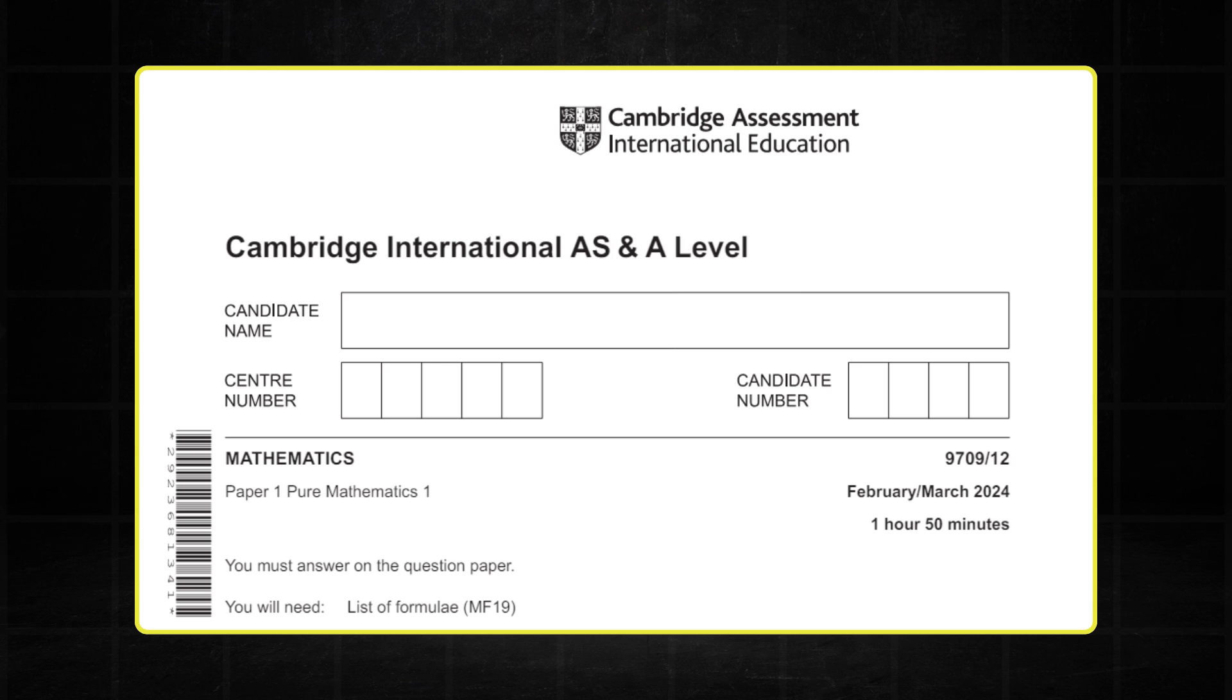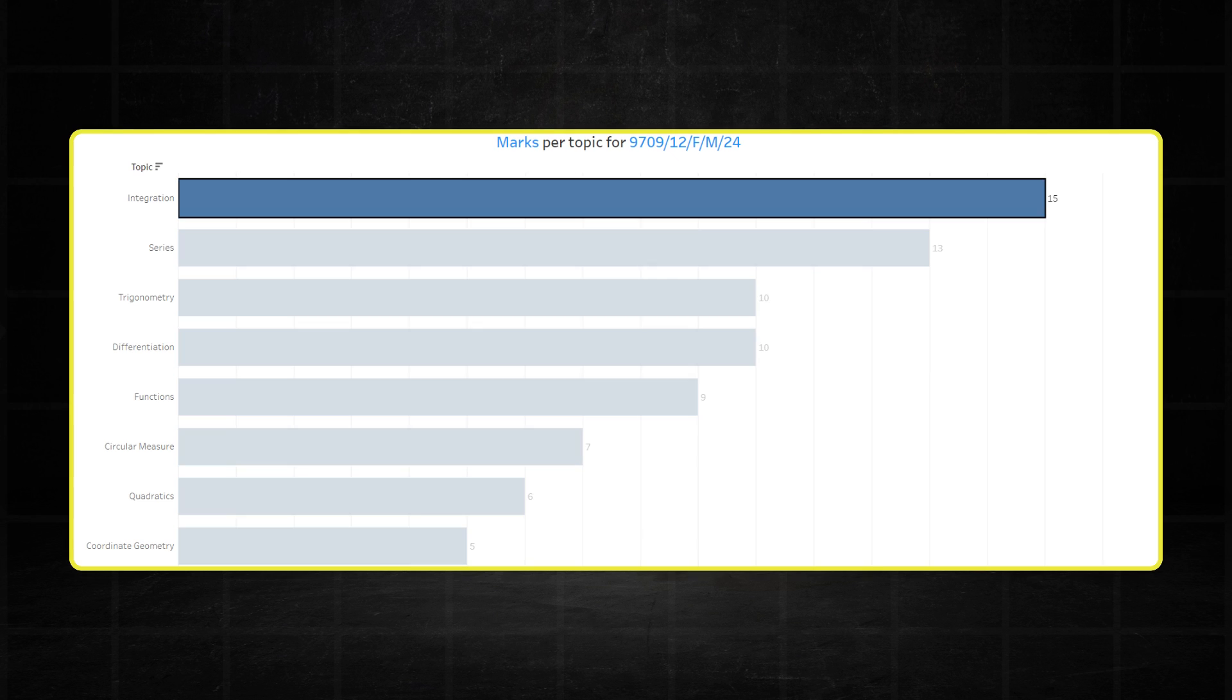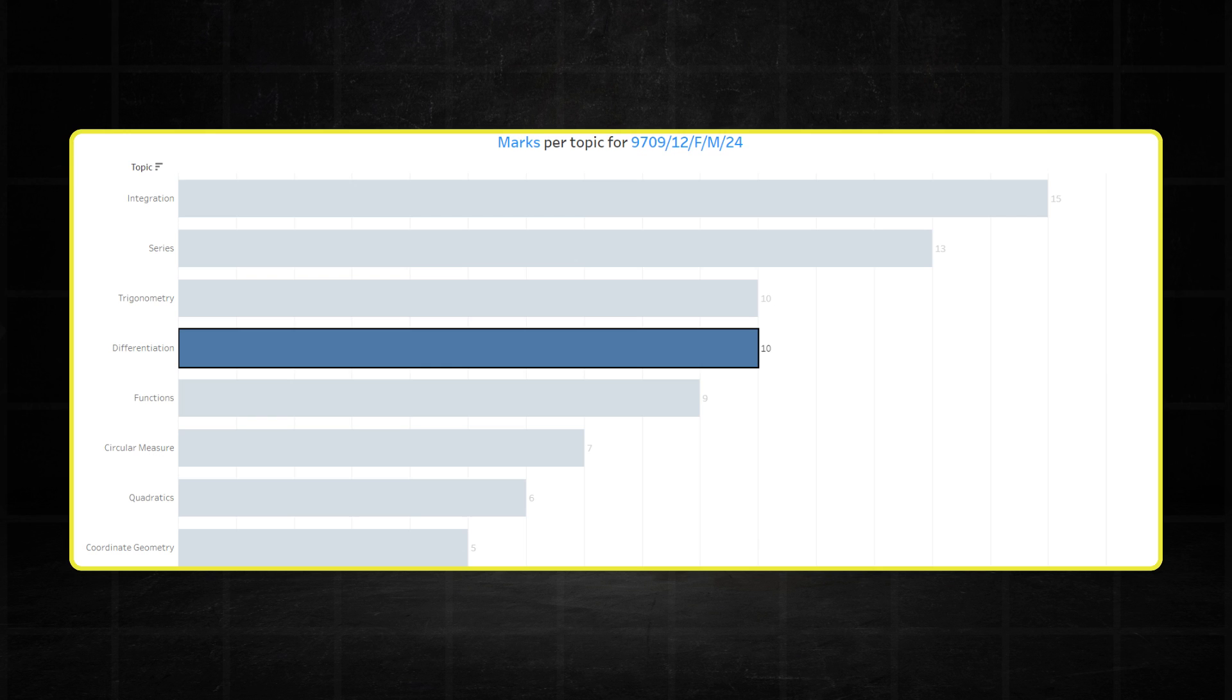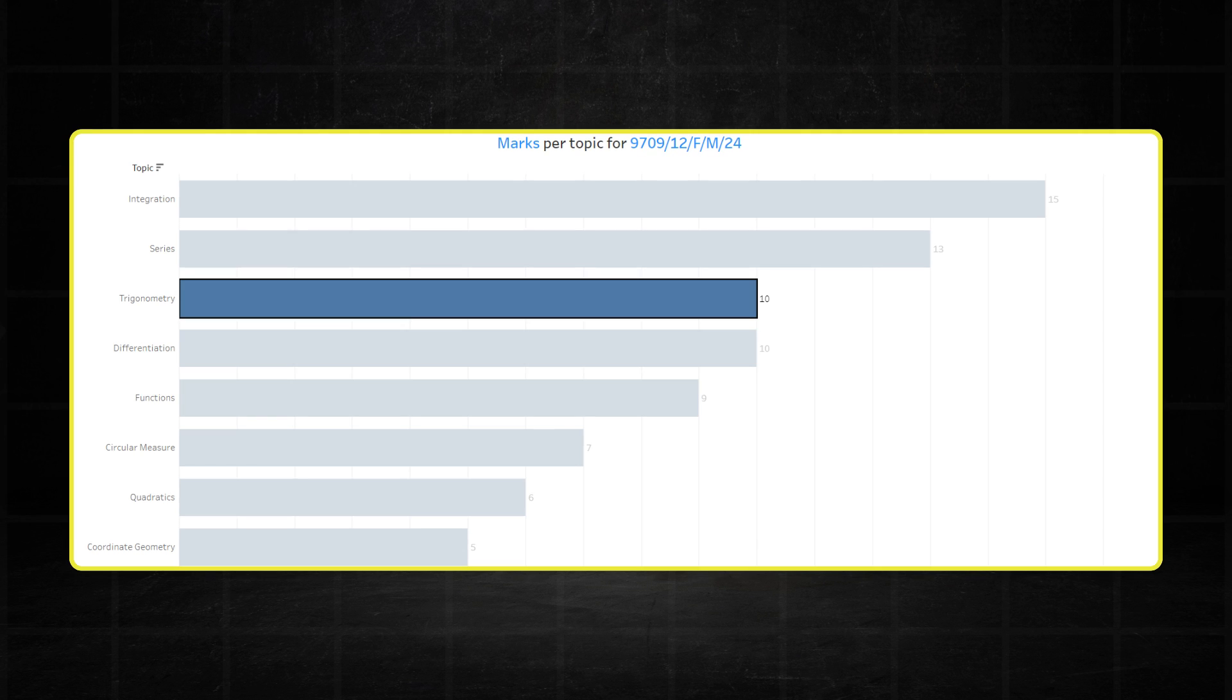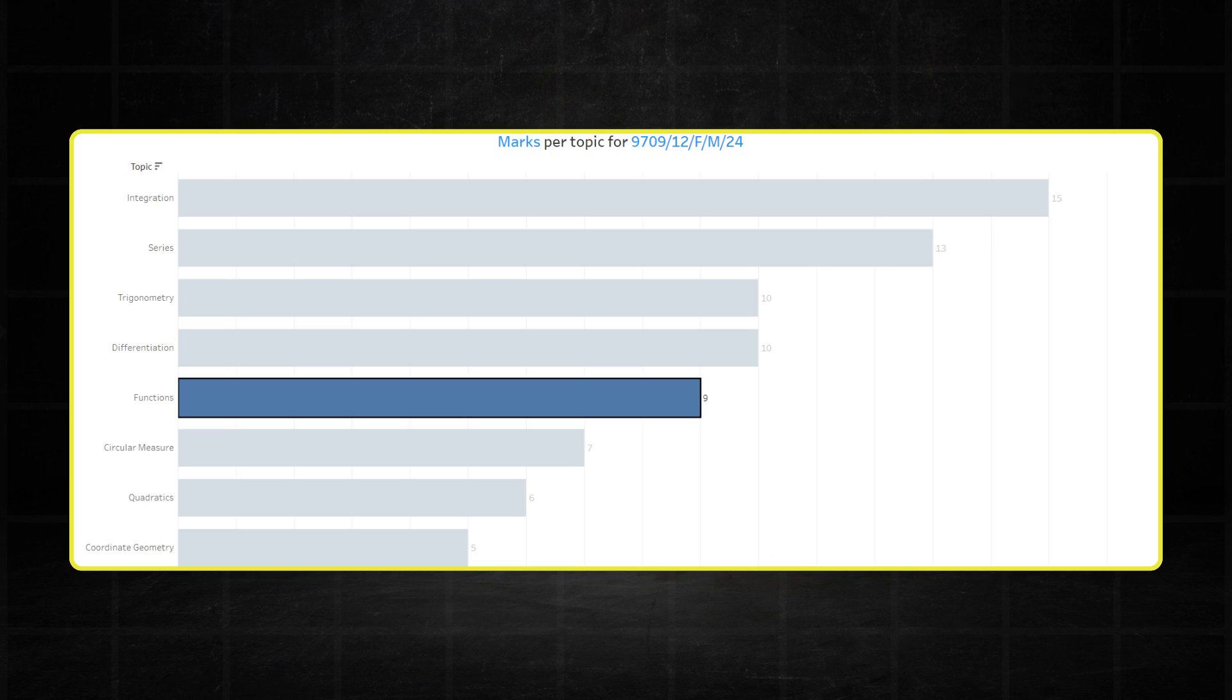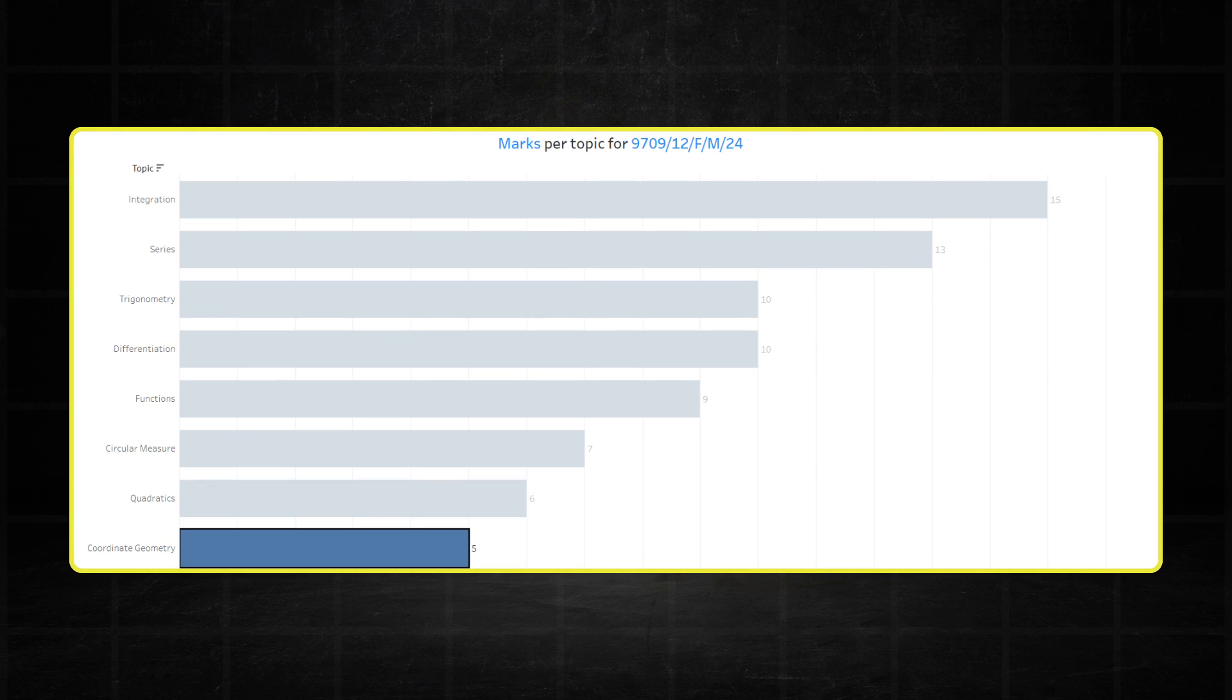Looking at the February, March paper for 2024, you'll notice that the distribution of marks is quite interesting. We have integration at the top with a shocking 15 marks. In second, we have series which we always expect to be up there with 13 marks. No surprises from differentiation with 10 marks. Trig is actually on the rise with 10 marks which is expected according to its trends in previous years. Functions is up there with 9 marks and then quadratics, circular measure and coordinate geometry.